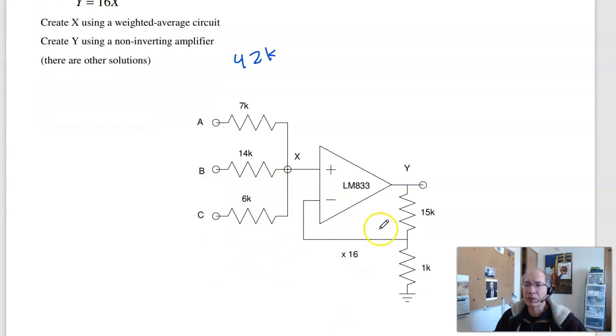To clear out the divide by 16, multiply by 16. That's the non-inverting amplifier that we looked at previously.